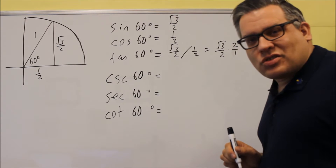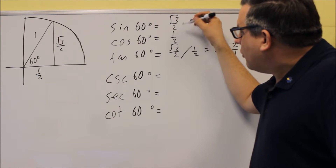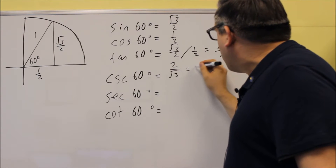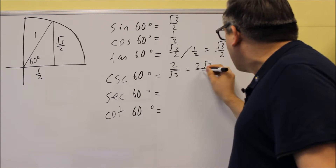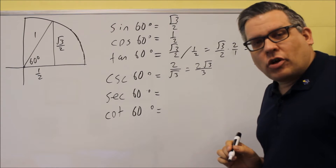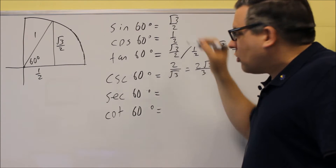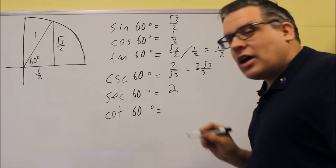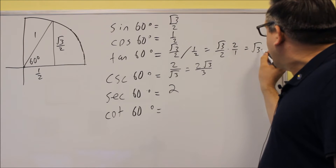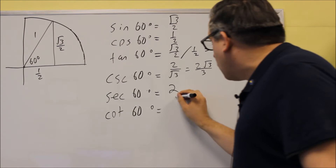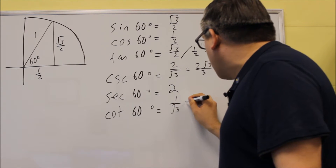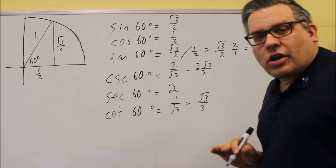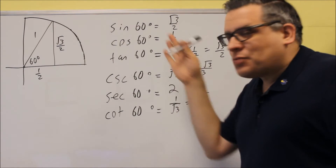Cosecant 60 is the reciprocal of sine 60, so we flip square root of 3 over 2 to get 2 over root 3, and after rationalizing that gives 2 root 3 over 3. Secant 60 is the reciprocal of 1 half, which is just 2. Cotangent 60 is the reciprocal of square root of 3, which is 1 over root 3, and after rationalizing we get square root of 3 over 3.